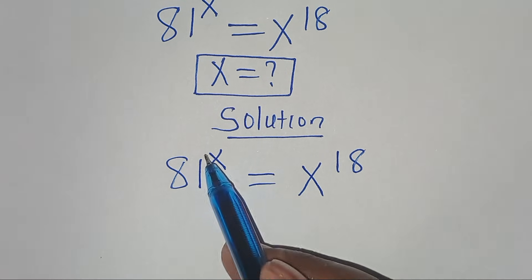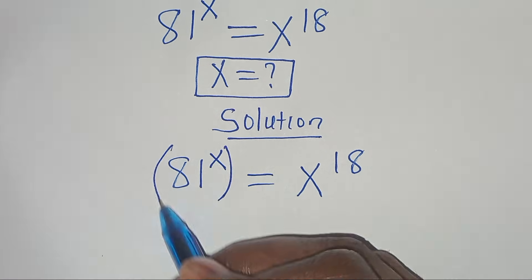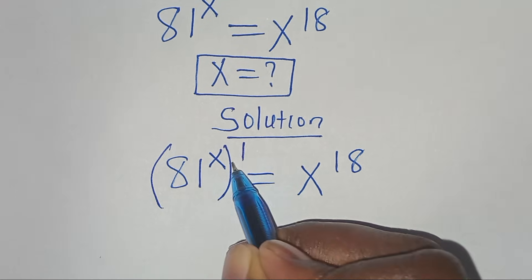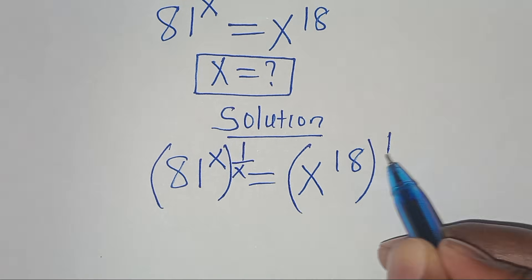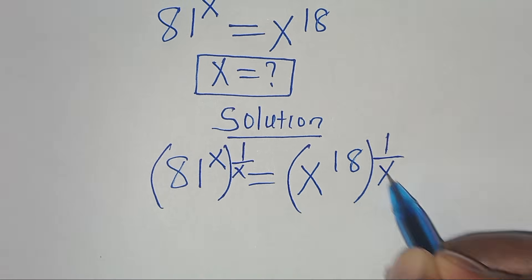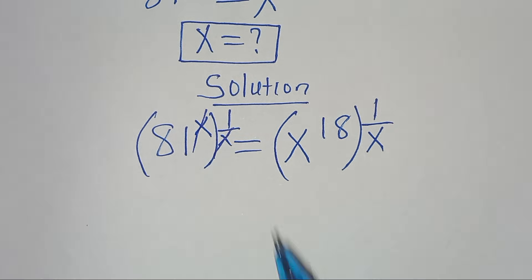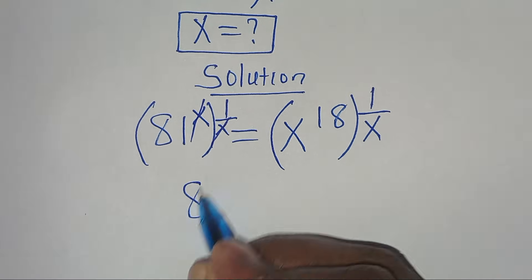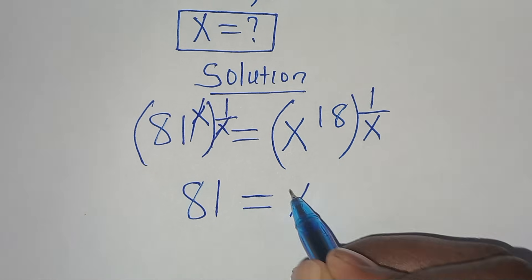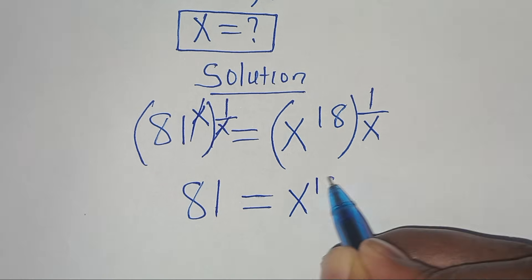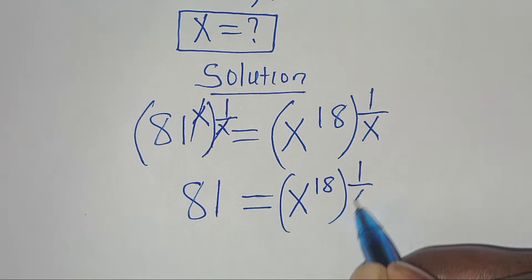The first step is to eliminate this power here. Let's multiply both sides by 1 over x. So on the right hand side here, we also multiply by 1 over x. So x and x simplify, so that we have 81.